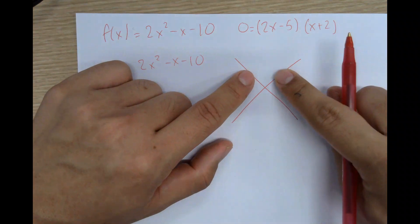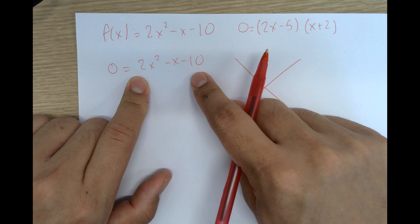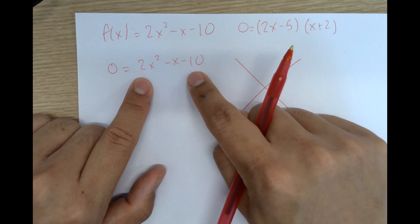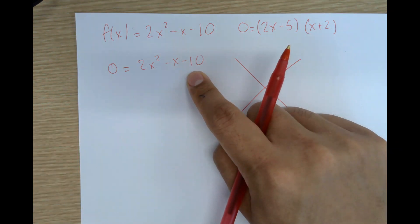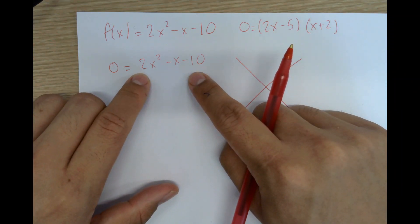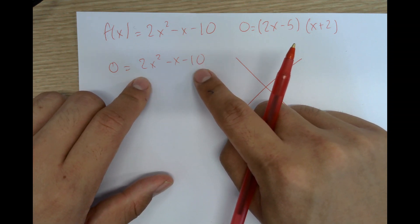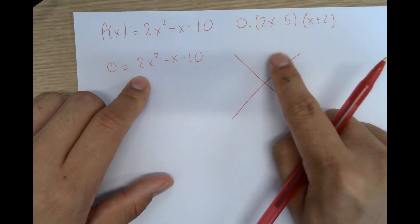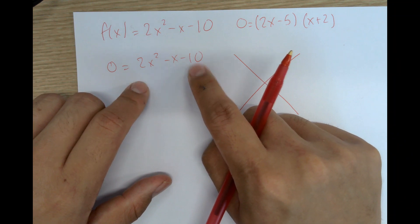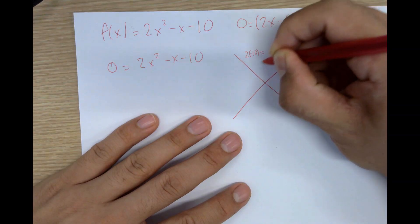Normally you would just put in the c value on top. But because our coefficient is greater than 1, in instances it could be less than 1, you want to multiply a times c. So the number on top of the diamond is going to be 2 times -10 or a times c. In this case, it would be 2 times -10, which equals -20.